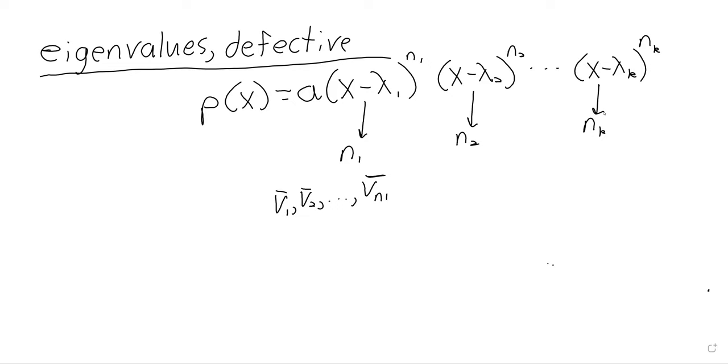If that happened, we have v1 e to the lambda 1 t, v2 e to the lambda 1 t, up to v n1 e to the lambda 1 t, and those would be the solutions we're looking for. But there is no guarantee that that will happen.